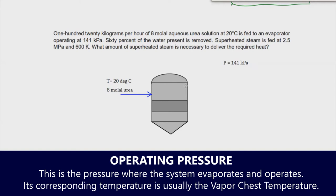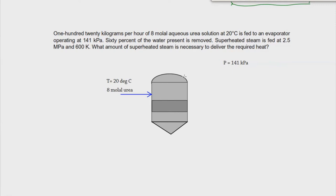If you added a pressure gauge at the evaporator, you would notice that this is the reading of that pressure — 141 kilopascal. And then 60% of the water present is removed. Since it's 8 molar, we know there is a fluid in the feed, so 60% of that will be removed.